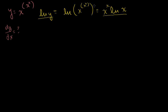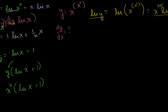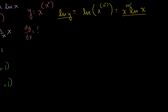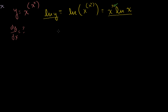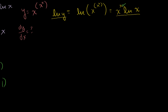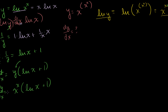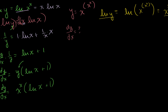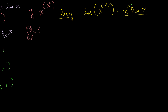We still have x^x in the equation, and normally that's hard to differentiate. But earlier in this video we just solved exactly that — the derivative of x^x is x^x times the natural log of x plus 1. So we can apply that result directly rather than taking the natural log again, which would get messy. Let's proceed with differentiating both sides.